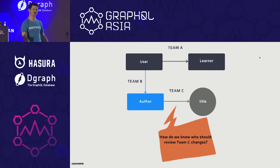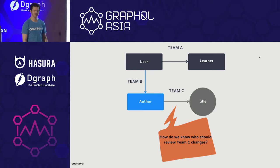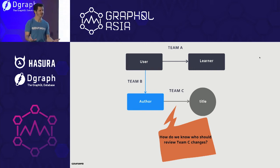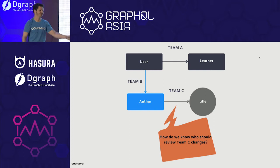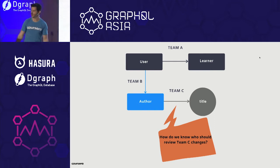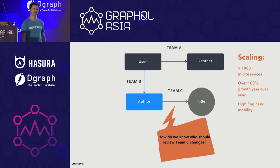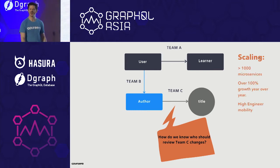So this is the question we were trying to answer: how do we know who should review team C's changes? It's one server, everybody put code there. Who owns this — everybody? Someone? No one? This is a really confusing process. And if we have three teams, they're pretty much in the same room, so they could just stand up and ask. But if this grows — let's say we have 1,000 microservices — follow me with this.